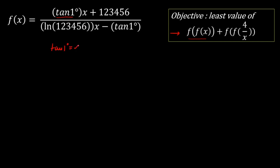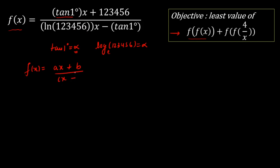tan(1°) is not a standard value and similarly log(123456) is not a standard value either. So let's substitute: let a = tan(1°), b = 123456, and c = log(123456). So f(x) = (ax + b) / (cx - a). Using these values a, b, c, let's calculate the composite function f(f(x)).